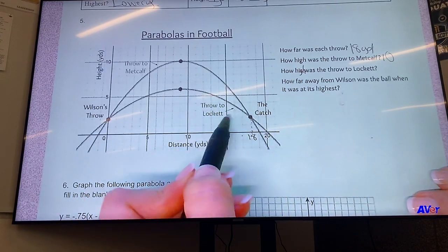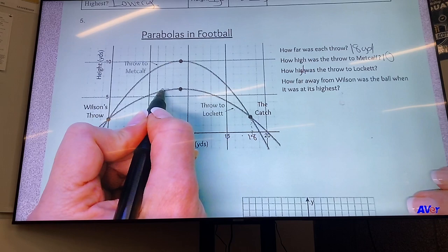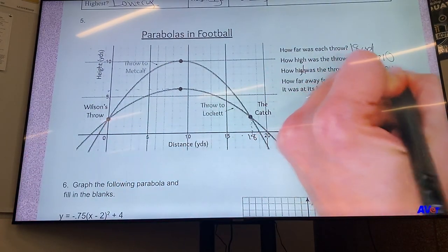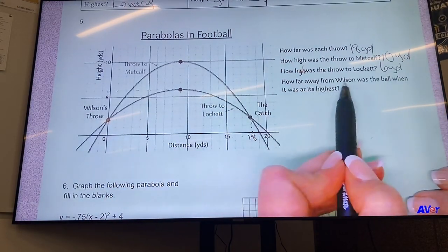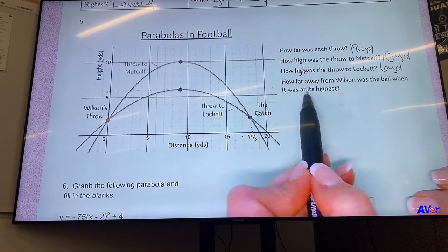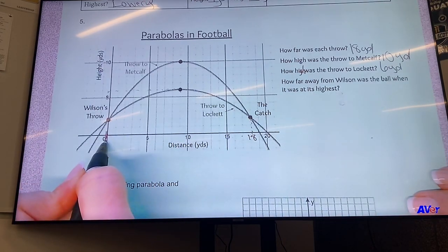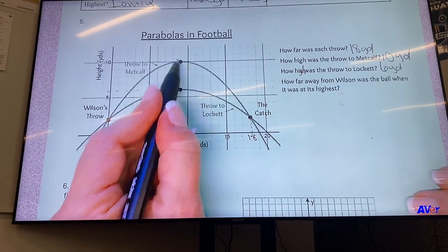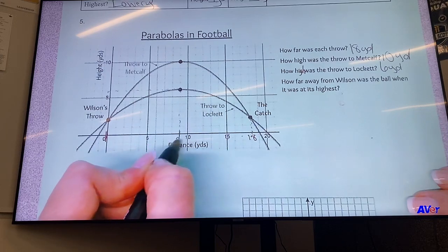And how high was the throw to Lockett? So you go over to the side and it's 1 yard above 5, so that is 6 yards. And how far away from Wilson was the ball when it was at its highest? Wilson's standing right here at the zero yard line, and then for both of the throws they were at their highest at 9 yards.